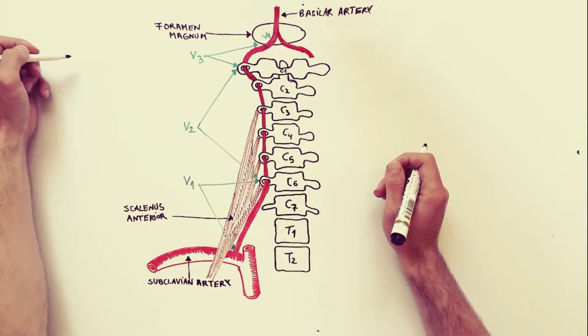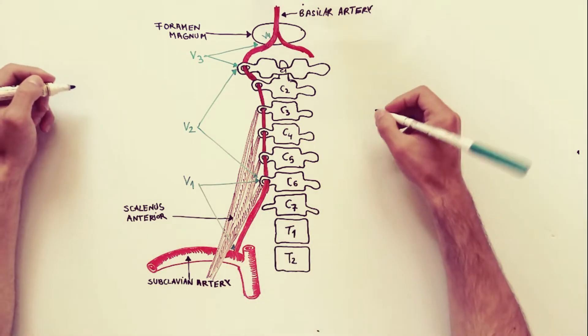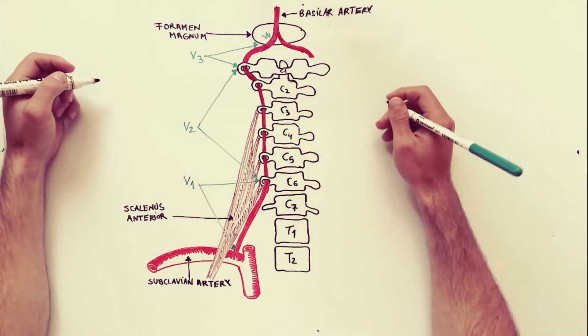And the last part, the fourth part of the vertebral artery, or V4, extends from the foramen magnum to the lower border of the pons.